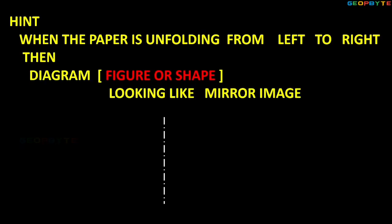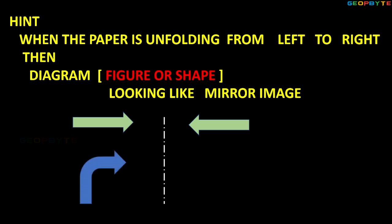Once observe the concept: when the paper is unfolded from left to right, the diagram or figure or shape looks like a mirror image. Suppose the diagram is an arrow symbol — open left to right or right to left, the diagram may show the arrow symbol in reverse — here it shows right shadow, it shows the left shadow. Left to right or right to left means the image works as a mirror image.